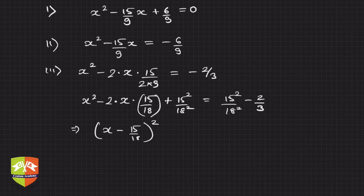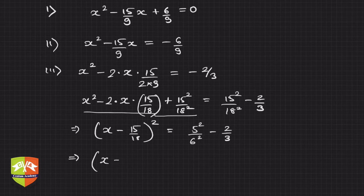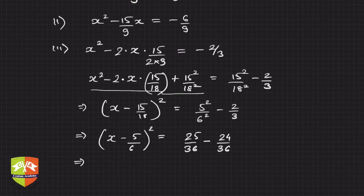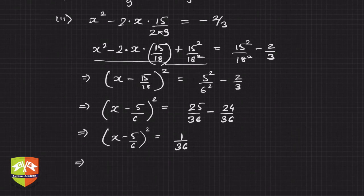Adding (15/18)² to both sides and simplifying 15/18 = 5/6, the left-hand side becomes (x - 5/6)². On the right-hand side: (5/6)² - 2/3 = 25/36 - 24/36 = 1/36. So the equation is (x - 5/6)² = 1/36.